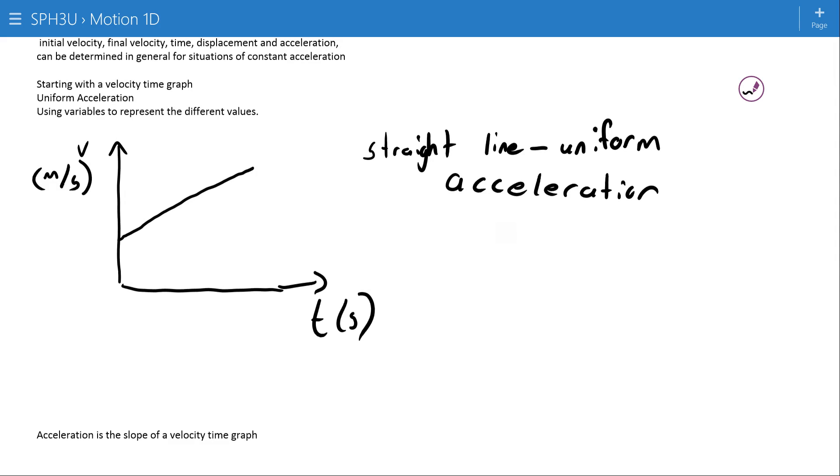So in general, what we're going to do is we're going to call the final time t. We're going to assume we started from zero. We're going to call the final velocity v2, and the initial velocity v1. And with those, we can start developing equations.